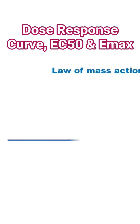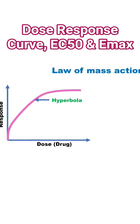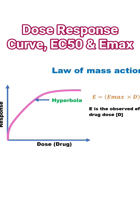The dose-response curve typically follows a rectangular hyperbola. Mathematically, the relationship is where E is the observed effect at a given drug dose D, Emax is the maximum possible response, and KD is the dissociation constant.